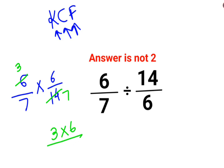3 multiplied by 6 upon 7 multiplied by 7. So the answer for this question is supposed to be 18 upon 49 and not 2.